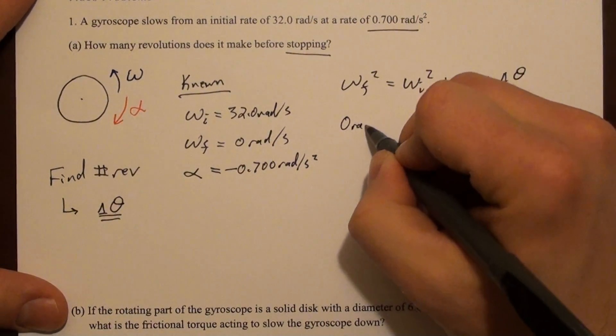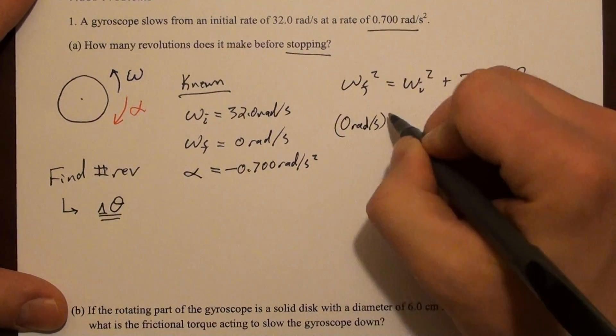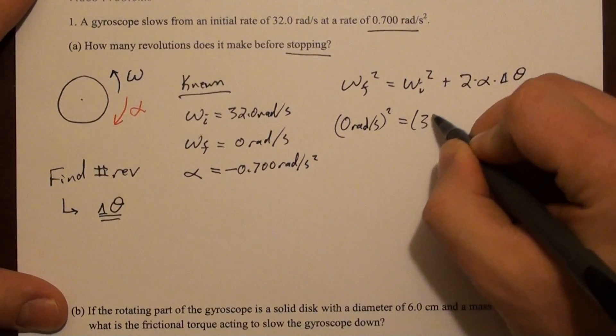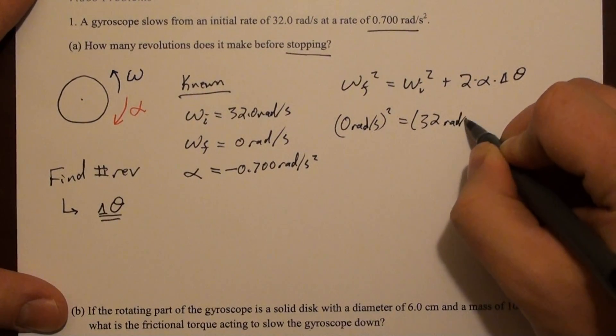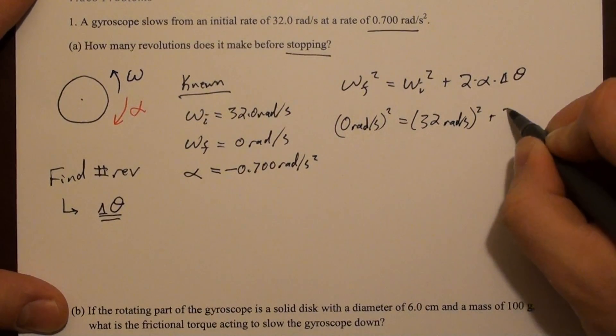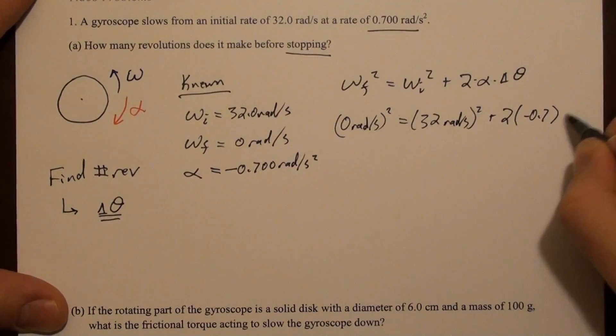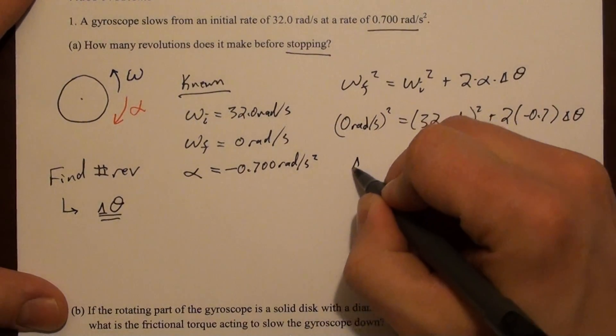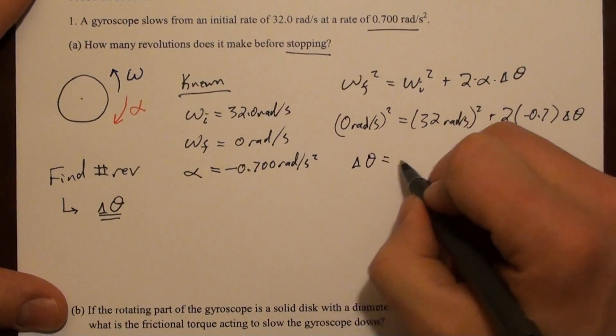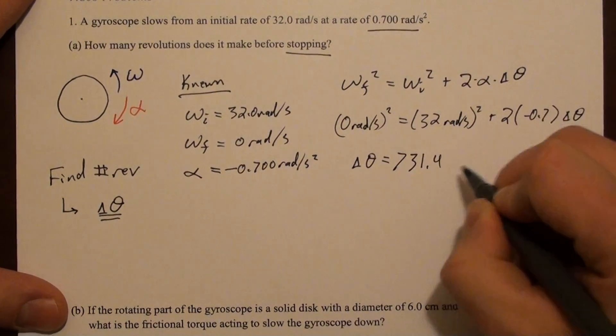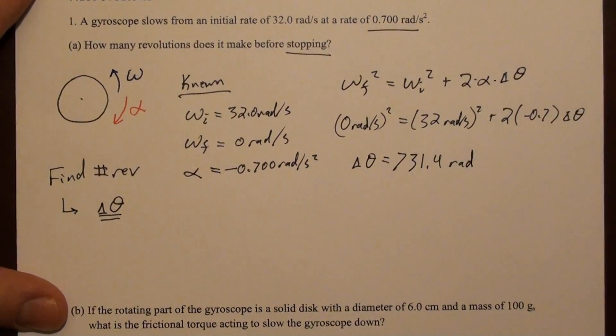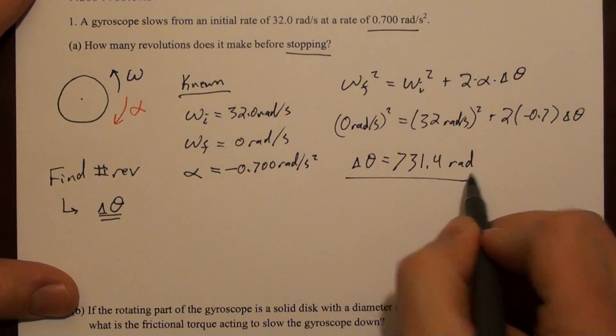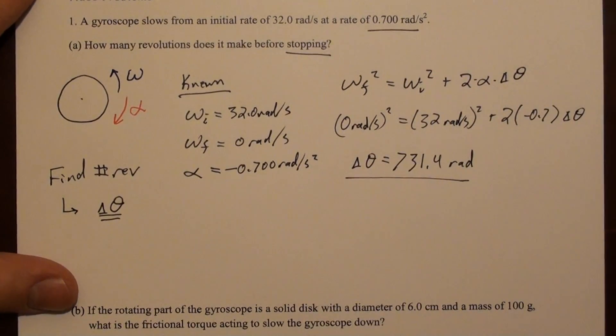Alright? So we plug in some numbers. Looks like 0 equals 32 squared plus 2 times minus .7 times delta theta. If you solve that for delta theta, what you get is 731.4, and that's in radians. Okay? So, that's not our final answer, but that's one step toward it.